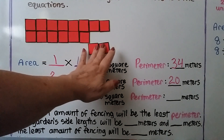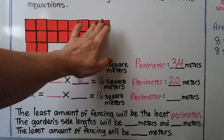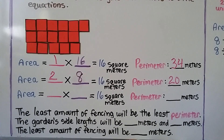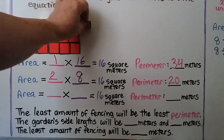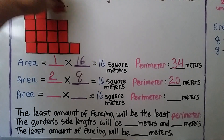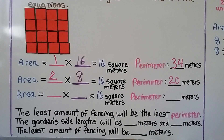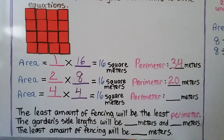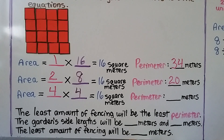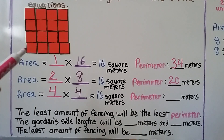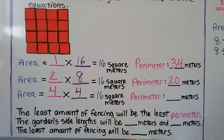Let's try a length of 3 — but we have one tile left over, so that doesn't make a rectangle. Length 3 won't work. What about a length of 4? Moving the tiles, we get a 4 by 4 rectangle with no empty spaces. Four times 4 equals 16 — that works! Counting around the outside: the perimeter is 16 meters.